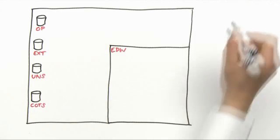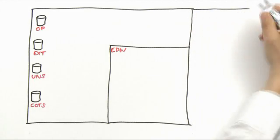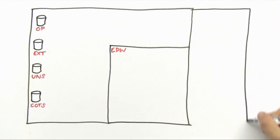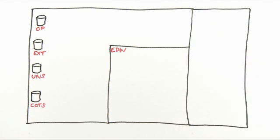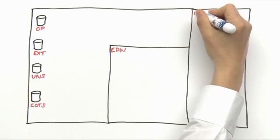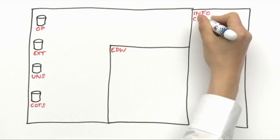The final layer is the information consumption layer. This is where consuming business users, or indeed consuming business processes or even systems, are being served. So it houses BI tools as well as a number of other special capabilities.